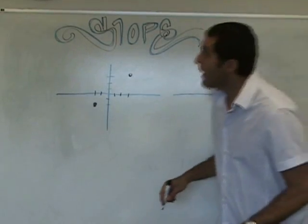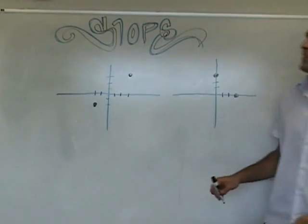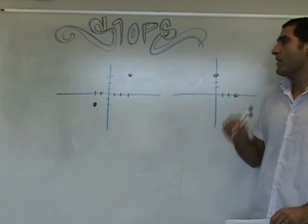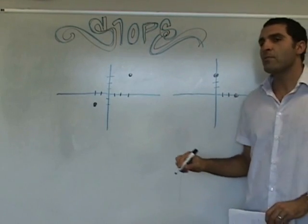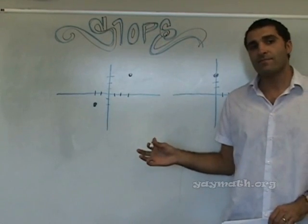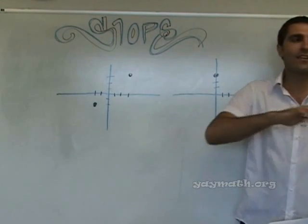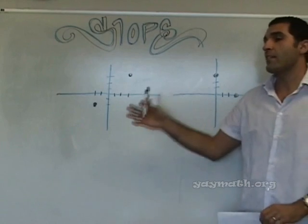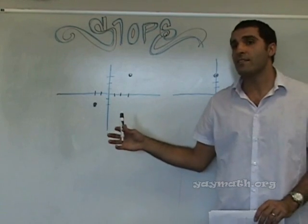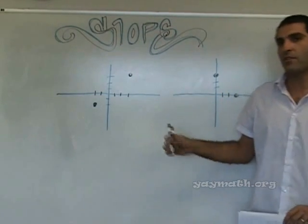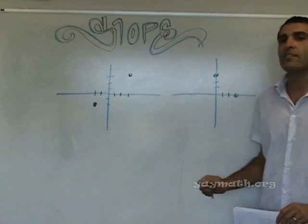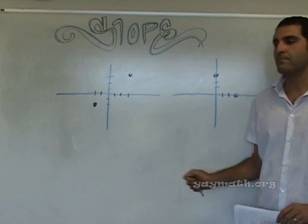Good afternoon. Today we're going to be doing slope. This is an Algebra 2 class, so it's going to start with Algebra 1 topics and then go quickly into Algebra 2, so hold on to your horses if you brought them.